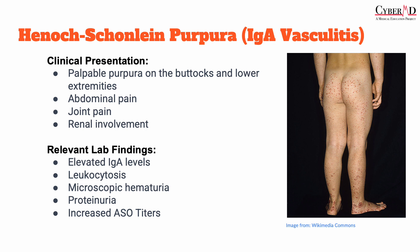GI involvement occurs in approximately 60% of cases as colicky abdominal pain. Sometimes this can mimic an acute abdomen. Patients may have bloody stools or melena, nausea, vomiting, and this can actually cause intussusception. Kidney involvement occurs in about half of cases as a nephritis with signs and symptoms of nephritic syndrome. Other organs such as the scrotum, peripheral nervous system, respiratory tract, and eyes can also be involved, but those are lower yield for the exam.